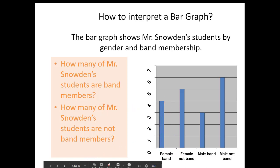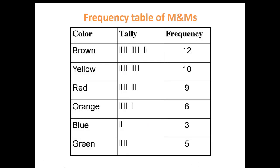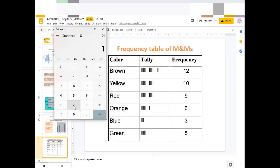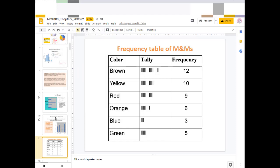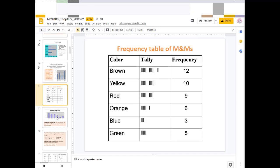Here we have opening a bag of M&Ms and doing a frequency count. For brown M&Ms there are 12, 10 yellow, 9 red, 6 orange, 3 blue, and 5 green. How many M&Ms total? If I add them all up — 12 plus 10 plus 9 plus 6 plus 3 plus 5 — that equals 45 M&Ms in the bag. We could even figure out percentages from that total.